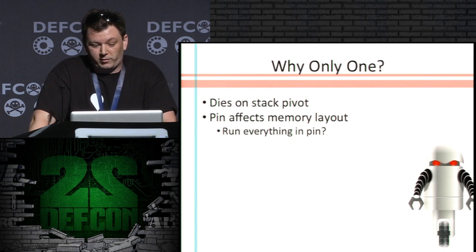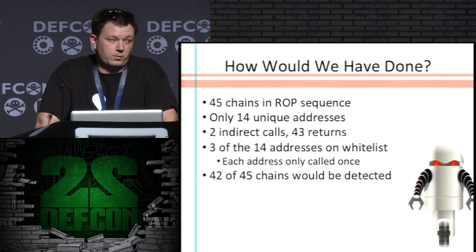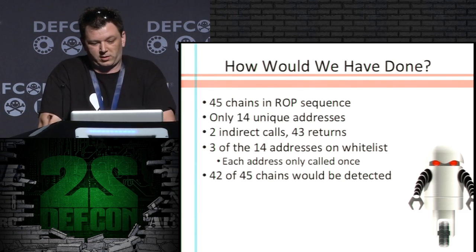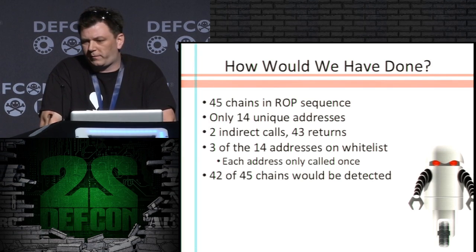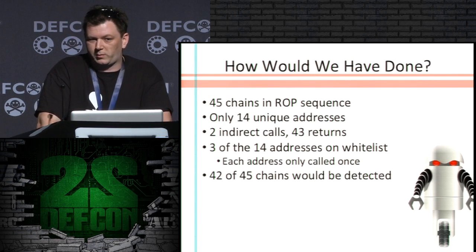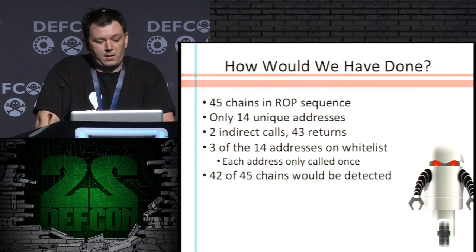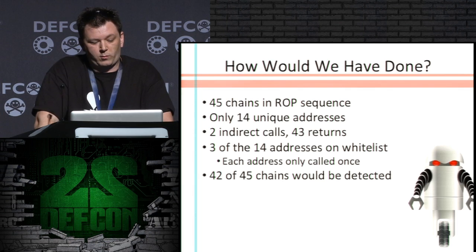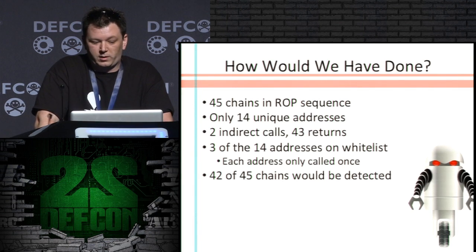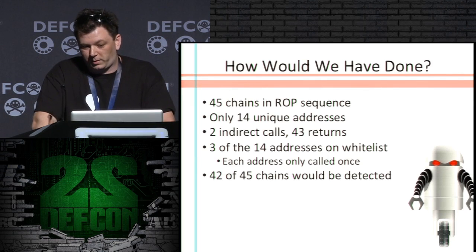On a side note, I don't know if we should run everything in PIN because I actually prevented it from happening. So let's make believe: how would we have done if this had actually executed completely? There are 45 chains in this ROP sequence, only 14 unique addresses — not terribly surprising, since once you have a gadget that works there's no sense finding another one. Two of these were indirect calls and 43 were returns. Three of the 14 addresses were on the whitelist, so we had a pretty good detection rate. Overall across all the chains, we only missed three of them — not too shabby.